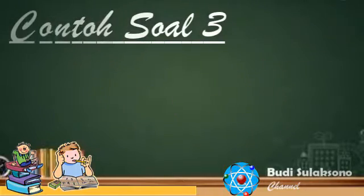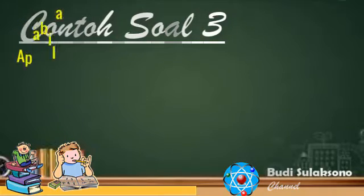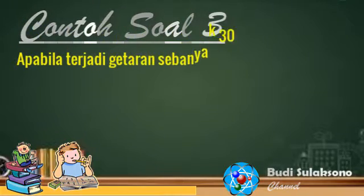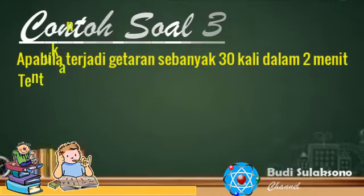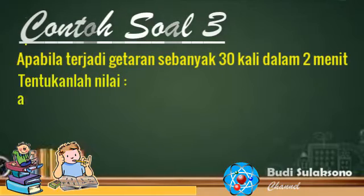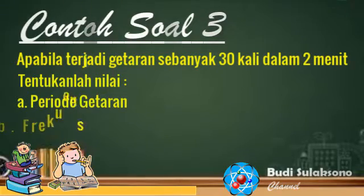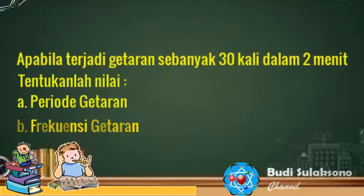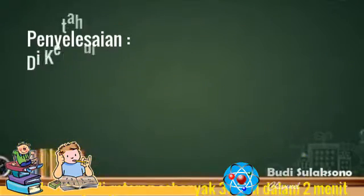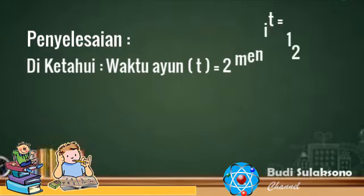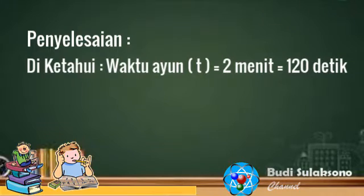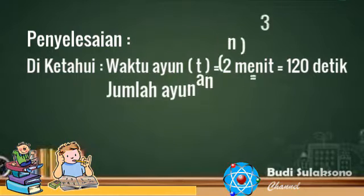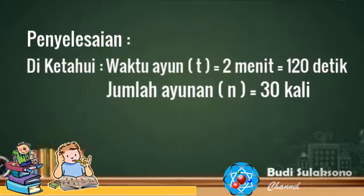Contoh soal 3. Apabila terjadi getaran sebanyak 30 kali dalam 2 menit, tentukanlah nilai A. Periode getaran dan B. Frekuensi getaran. Penyelesaian: diketahui waktu ayun atau T sama dengan 2 menit sama dengan 120 detik, dan jumlah ayunan atau N sama dengan 30 kali.